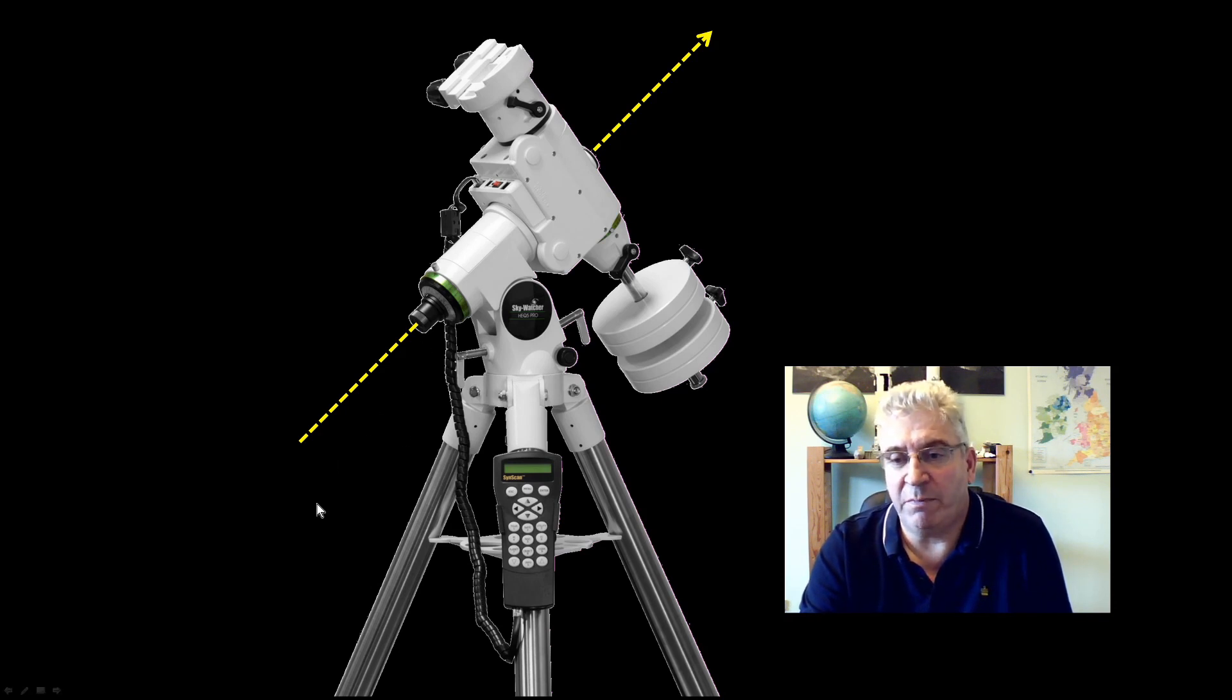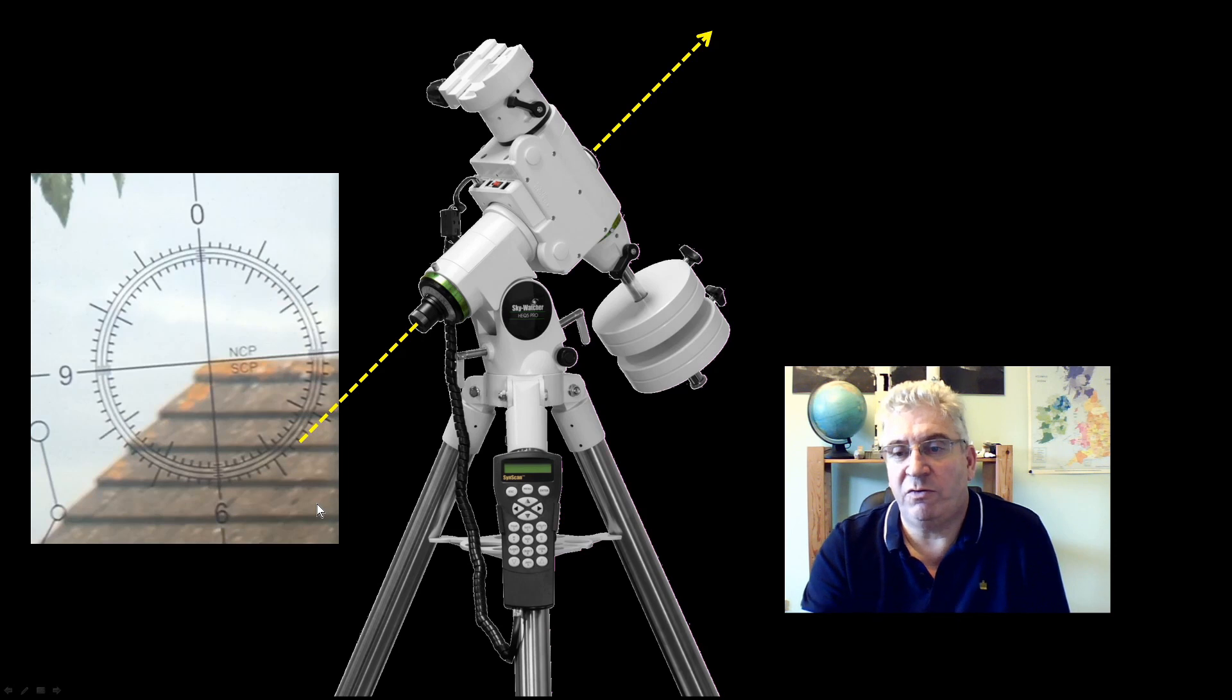That's done with the aid of the polar scope. When we look through the polar scope and see this graticule, obviously this picture is taken in the daytime, but at night time in the northern hemisphere you just see the bright star of Polaris. You try very hard with your azimuth and altitude screws to position Polaris the right place on these graticules for your location.